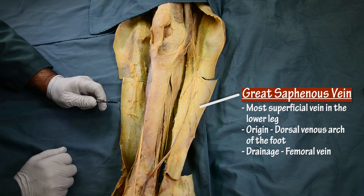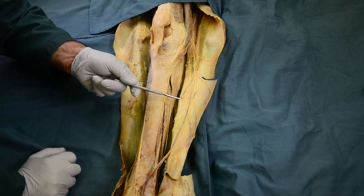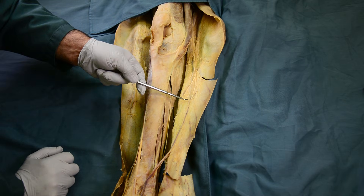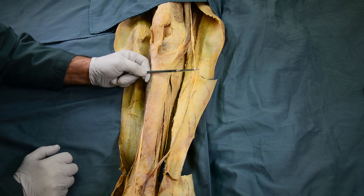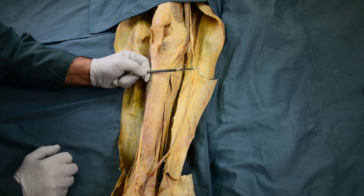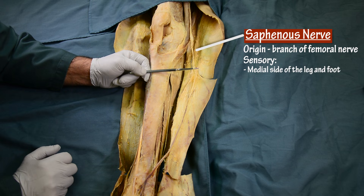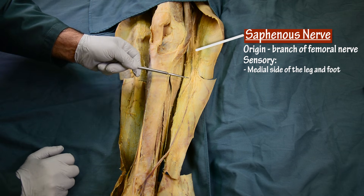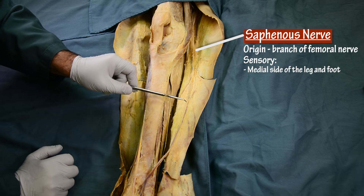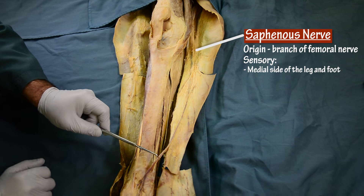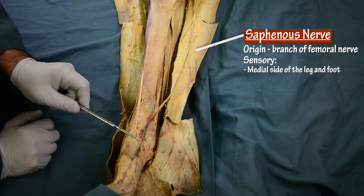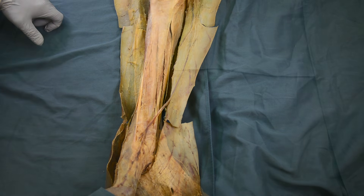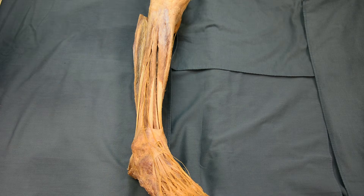The other structure within the superficial fascia which runs with the great saphenous vein is this nerve — the saphenous nerve, a continuation from the femoral nerve. The saphenous nerve supplies the skin on the medial leg and then goes to the medial side of the foot.